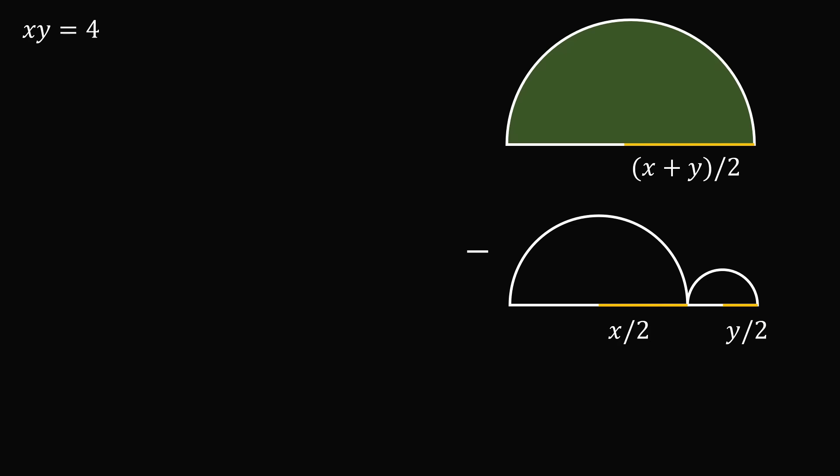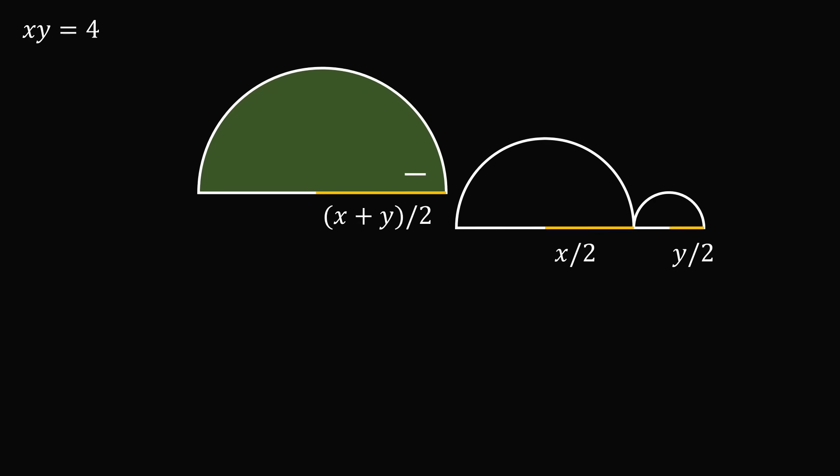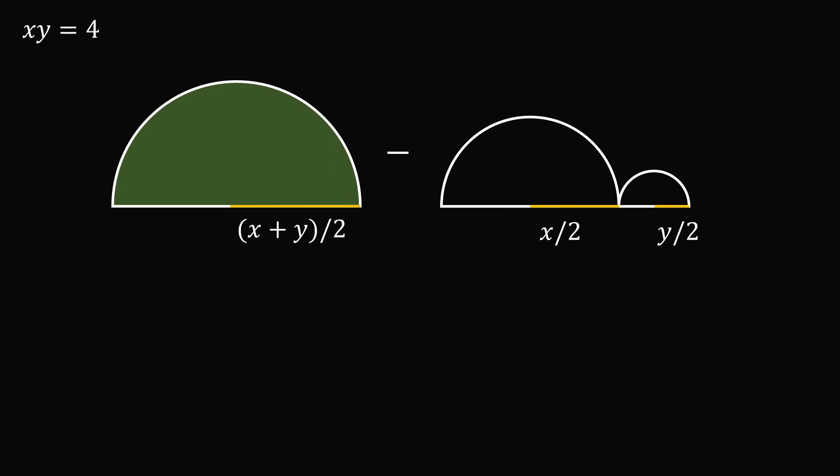So we can now set up an equation to solve for the green area. We just need to take the area of this large semicircle, minus these two smaller semicircles areas. We know that a semicircle has an area of one half pi r squared, so we can substitute in for the values of r in each of these semicircles. So we have the large semicircle, and r will be equal to one half x plus y, then we have this semicircle where r is equal to x over 2, and finally we have r is equal to y over 2.